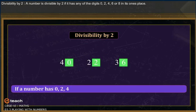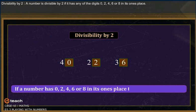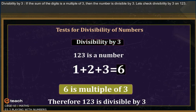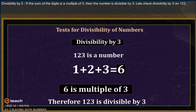Divisibility by two: a number is divisible by two if it has any of the digits zero, two, four, six, or eight in its ones place. Divisibility by three: if the sum of the digits is a multiple of three, then the number is divisible by three. Let's check divisibility by three on 123.